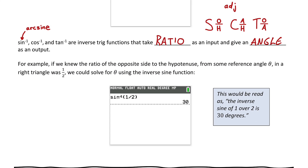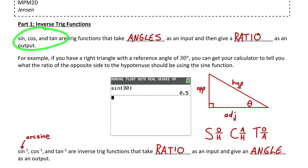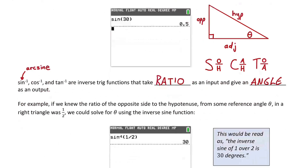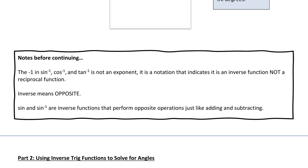So to summarize: inverse sine, cosine, and tan functions take a ratio as input and give you an angle, whereas the normal primary trig functions — sine, cosine, tan — take an angle as input and give you a ratio. Also, the negative one notation on inverse trig functions is not an exponent and not the reciprocal — it just means the inverse function. Inverse means opposite, which is why inverse sine takes a ratio as input and outputs the angle.